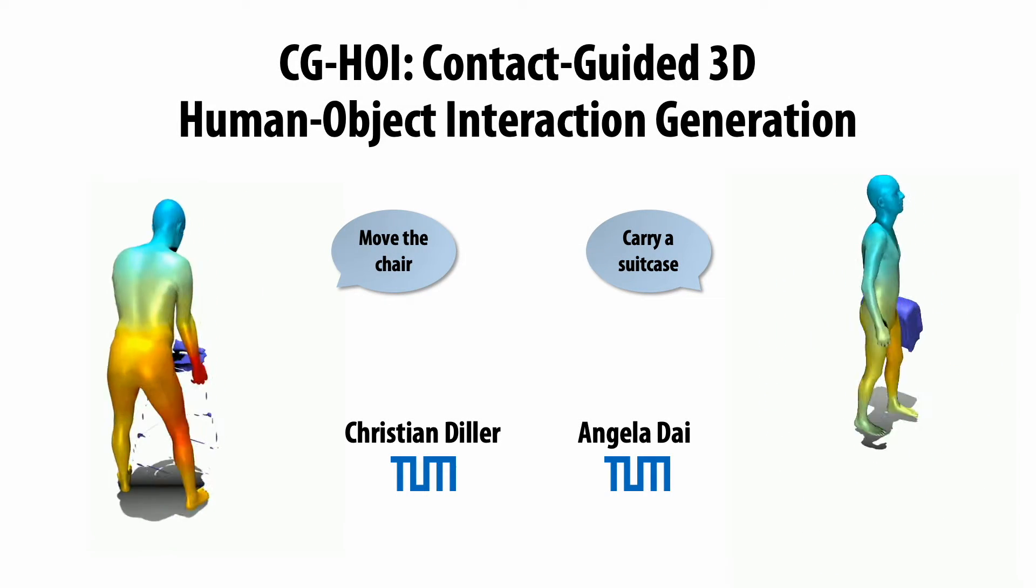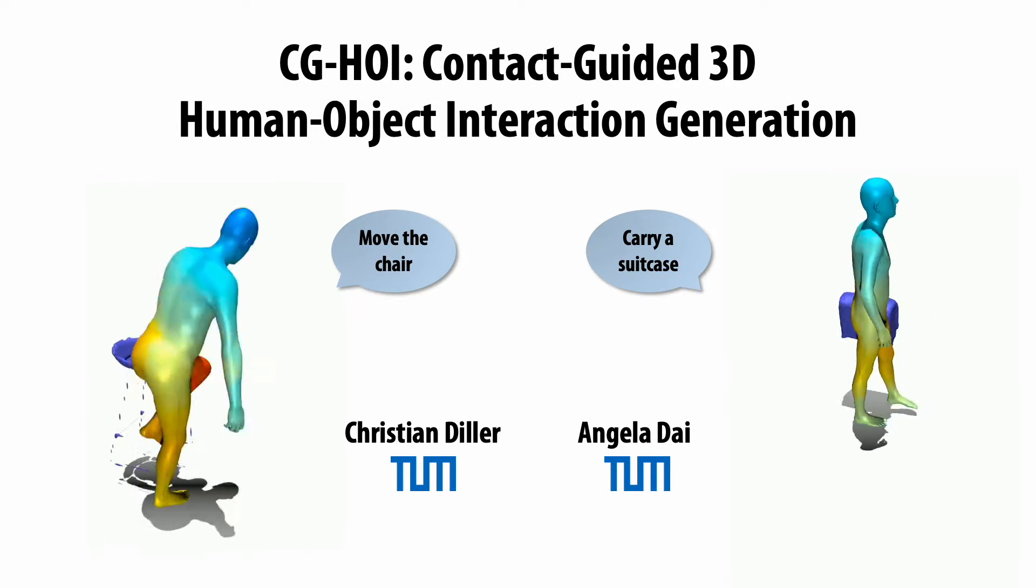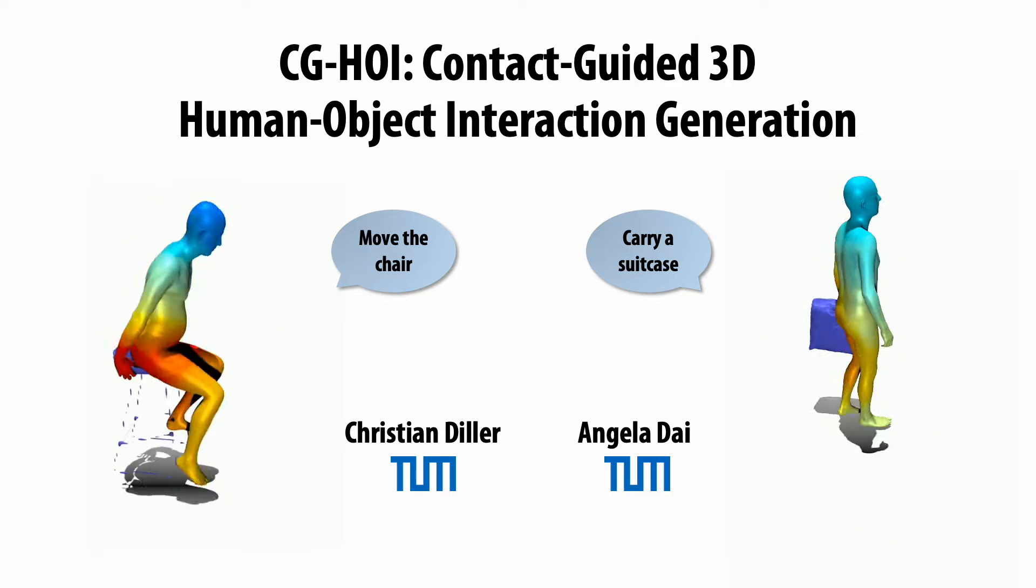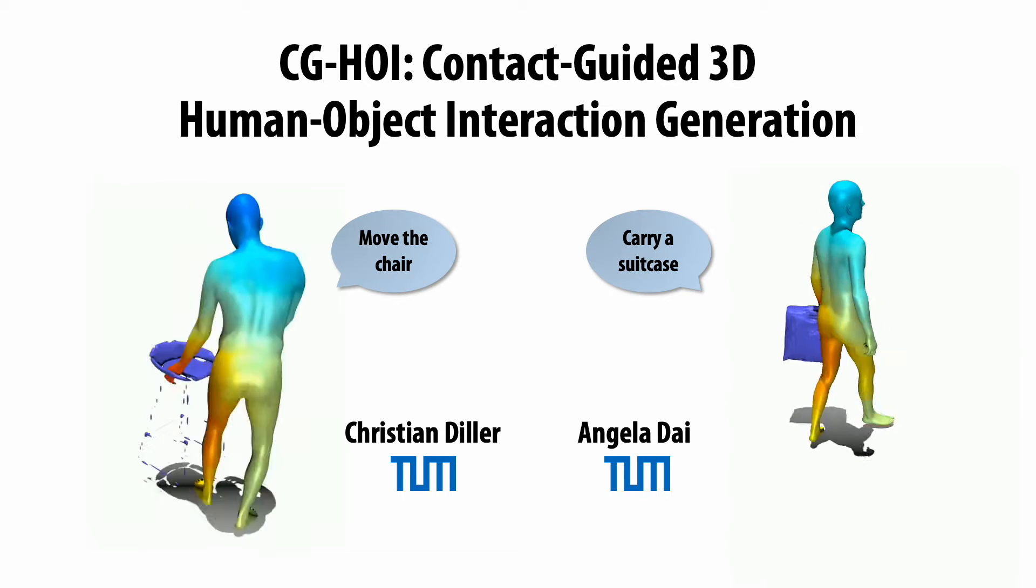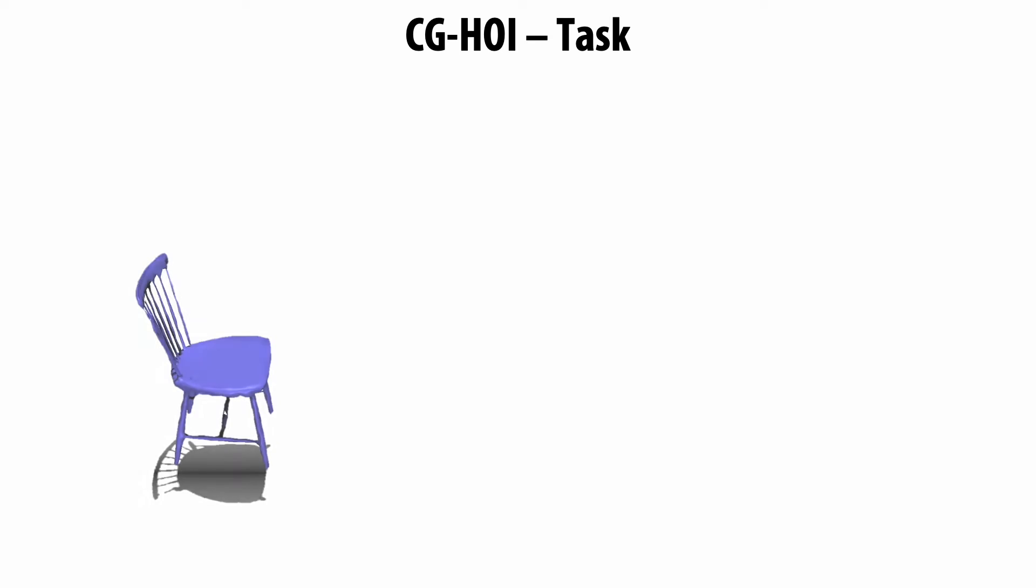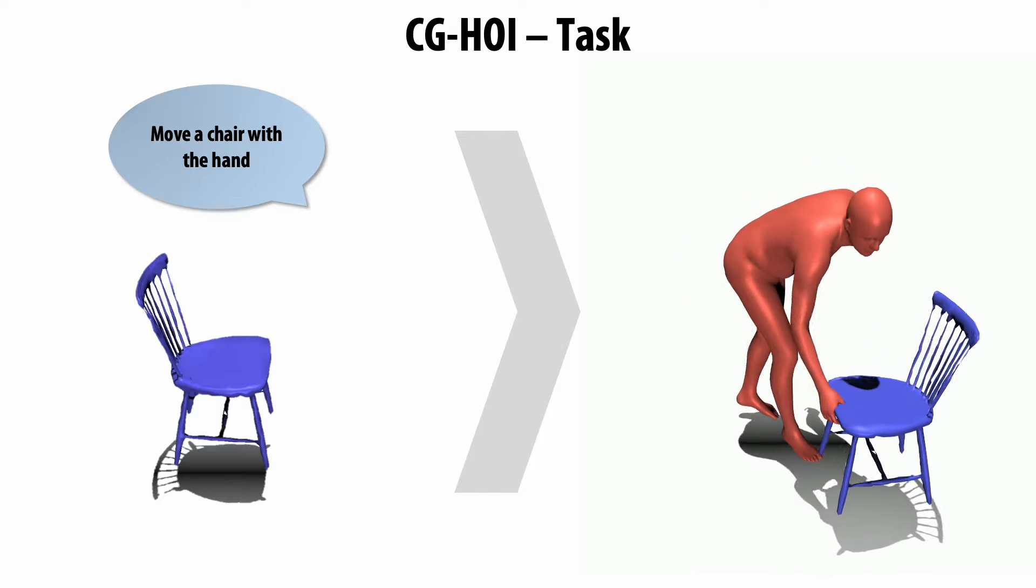We present an approach to generate realistic 3D human-object interactions, modeling the interdependency of human and object motion. Given a static object geometry and a short text description, we generate a dynamic sequence of human bodies and corresponding object motion.